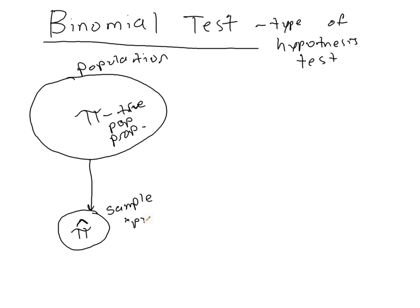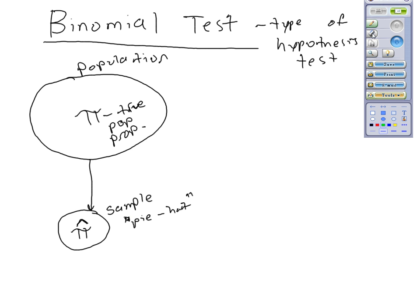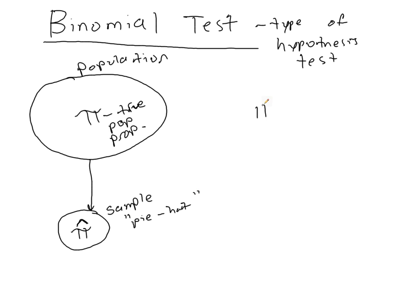So I'll just write that over here, pi hat. So that's a quote, quotes right there. So you would pronounce that as pi hat. So this is an estimate of the true population proportion. So pi hat is an estimate of pi.